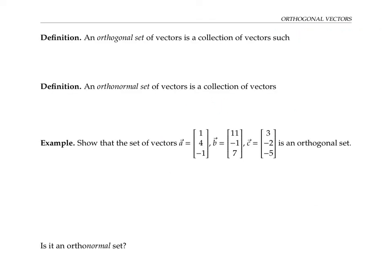Let's run through a couple more definitions. An orthogonal set of vectors is a collection of vectors such that for any pair of vectors V and W in the collection, V is orthogonal to W, i.e., the dot product of V and W is zero.